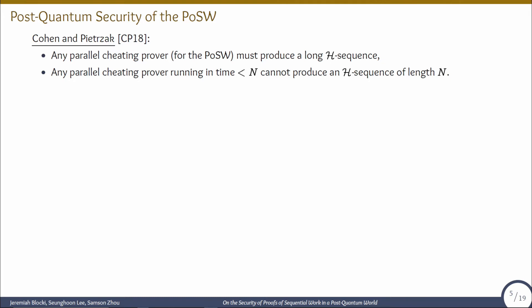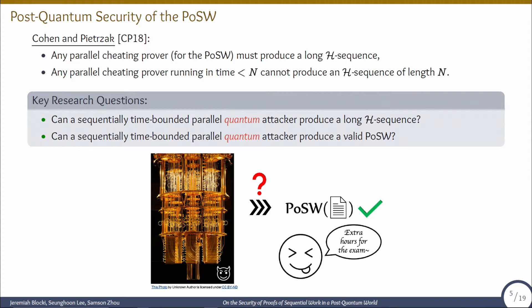For this work, we focused on Cohen and Peterczak's construction. Since their security proof was split into two parts, we extend these questions to the quantum random oracle model. Our key research question is whether a sequentially bounded parallel quantum attacker can produce a long H sequence and produce a valid proof of sequential work. For example, suppose the student quantum cheat, who submitted the solution around three hours late, has a state-of-the-art quantum computer. The short answer is no.